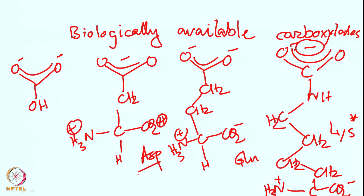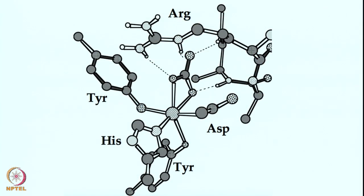We will quite often see aspartate, glutamate, and sometimes even bicarbonate. In addition to carbonate binding, other anions such as phosphate, arsenate, pyrophosphate, citrate, and oxalate are all capable of binding with the metal center. There are different metalloenzymes that can also bind this sort of anion. The ferric binding protein can also bind phosphate, arsenate, citrate, oxalates, and pyrophosphates.